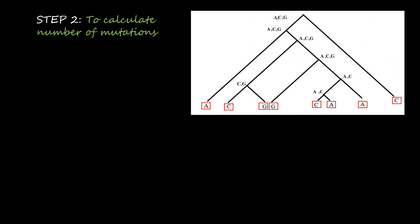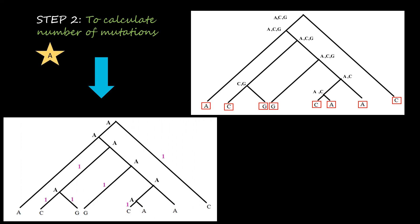Now we calculate the number of mutations. In the previous step we assigned all possible characters at each node moving bottom-up. Now we move top-down — from root to terminal nodes — and count mutations at each step. Since the root node has three possible character states (A, C, G), we generate three tree topologies: Tree 1 with A as root, Tree 2 with C as root, and Tree 3 with G as root, and count mutations for each.